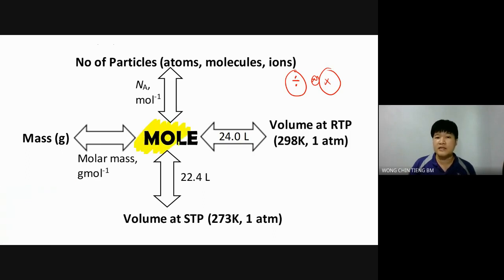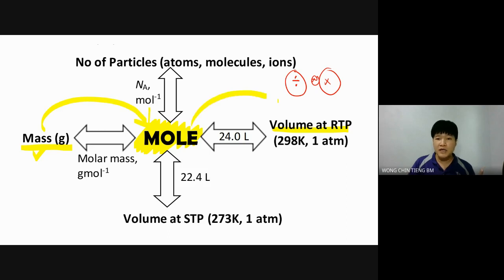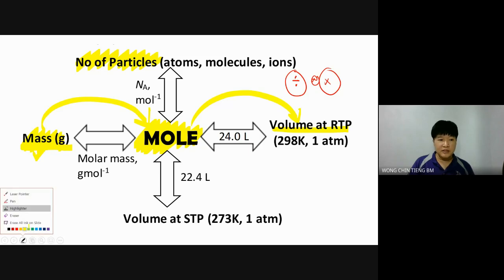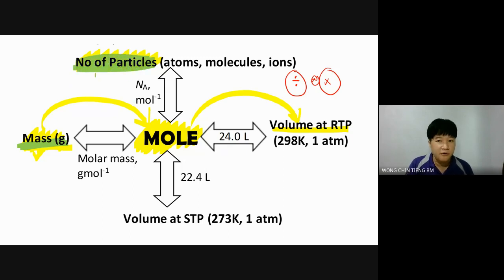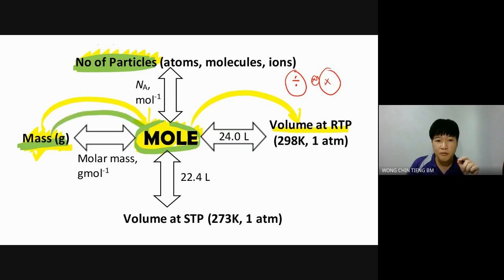The first thing: mole is always sitting in the center. When mole is in the center, it means if the question gives you mass, you must first find the number of moles, then find the volume. If the question gives mass but asks for number of particles, you cannot go directly — everything must go through number of moles. That's why number of moles sits in the center.